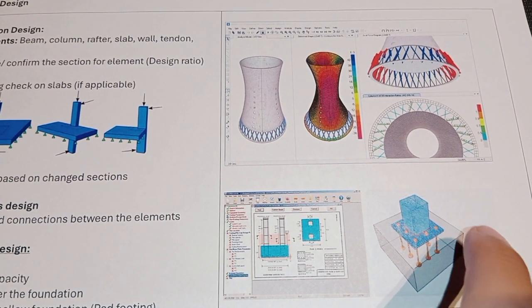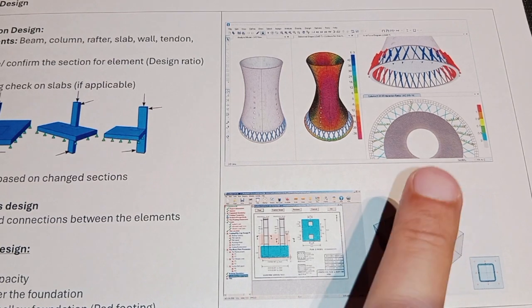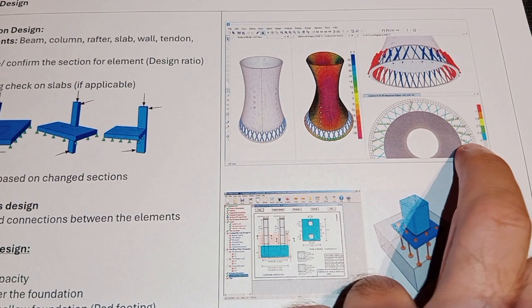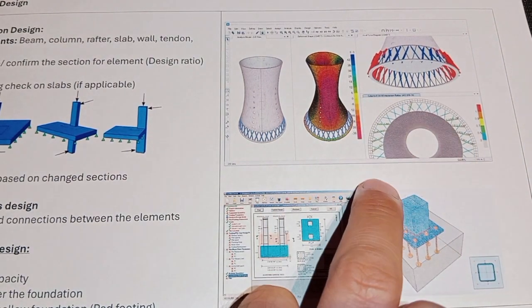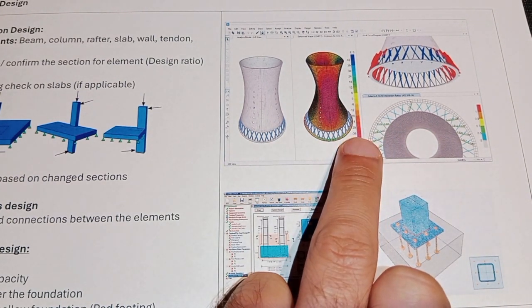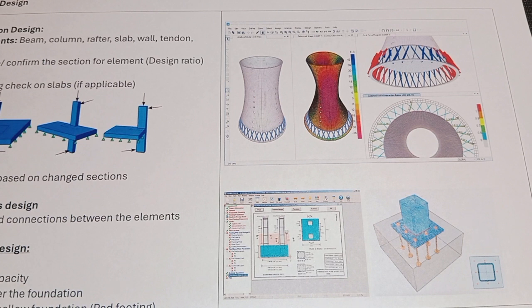Here I have shown some design ratios. When applying design and analysis, we need to always have a design ratio on the safe side. Green indicates safe results, but it depends on the software. Make sure you have the correct design ratio after assigning sections. The foundation design schematic diagram shows that we need to apply all the loads from the structure to design the foundation and transfer them to the soil.